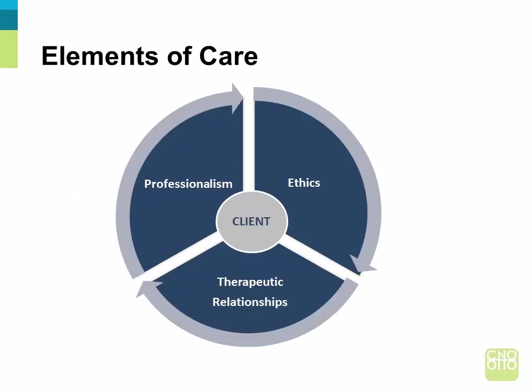As identified in Chapter 1, privacy breaches are serious offenses that negatively affect the trust between nurses and their clients. To maintain this trust, nurses need to keep their clients as the focus of care by always applying the three elements of care: professionalism, ethics, and therapeutic relationships. When you apply these three elements, you make the client the center of your nursing care. As you review the case studies in this webcast, consider how the absence of these three elements when dealing with clients' health information can lead to privacy breaches and erosion of trust.